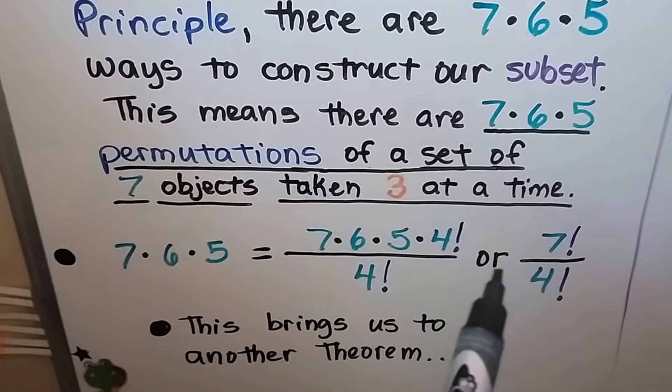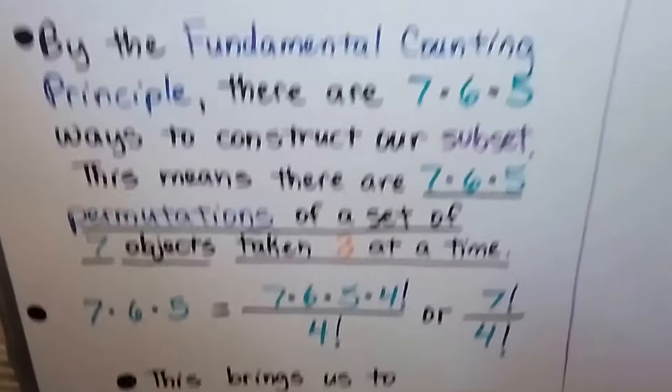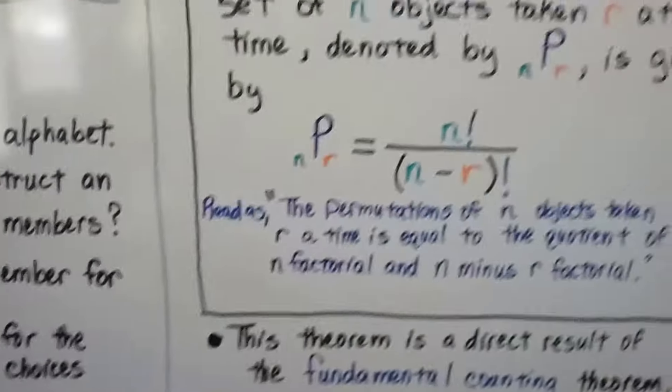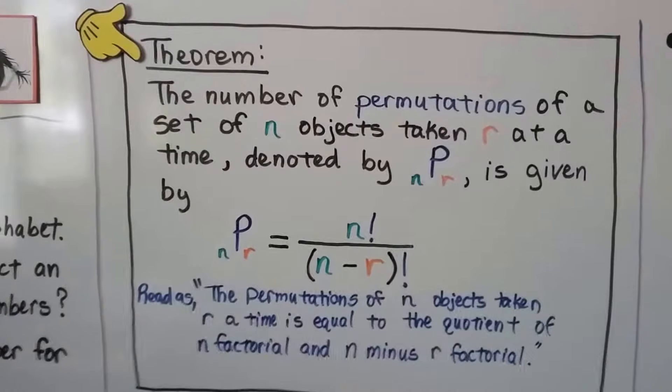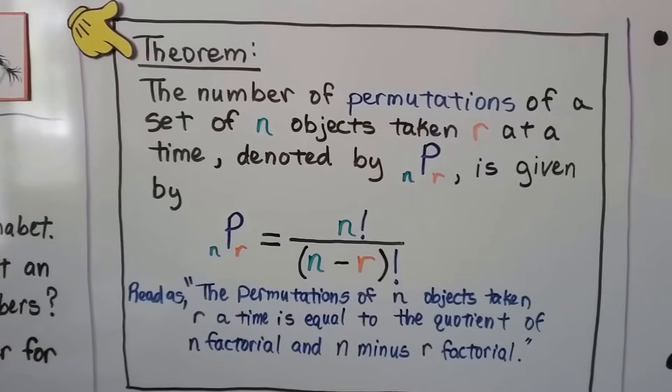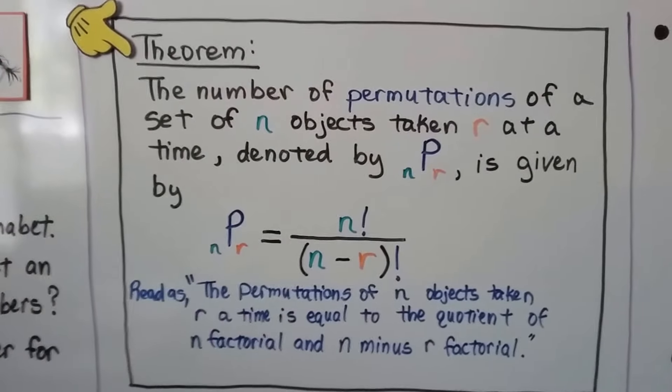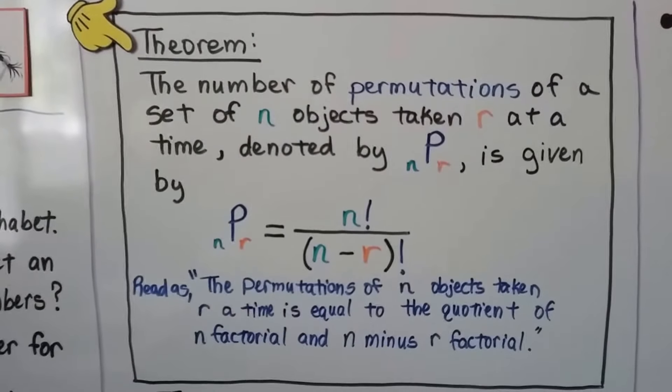And this brings us to another theorem, and I'll explain this further. The number of permutations of a set of n objects taken r at a time, denoted by nPr, is given by this formula.